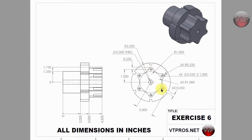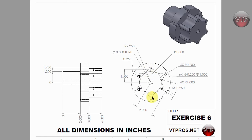I need to create a circle here and a circle here, all the way around. One circle has a radius of a quarter inch, the other has a diameter of 0.25 inches. So really one of them is 0.25 radius and the other is 0.125 radius.